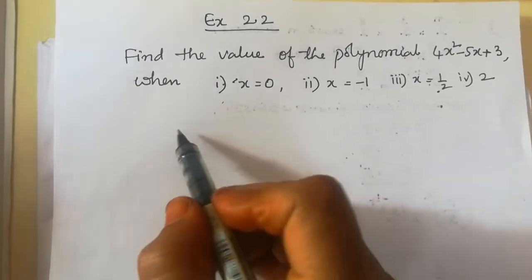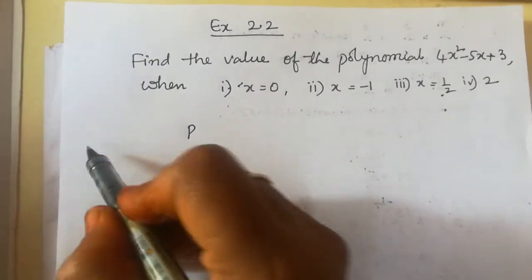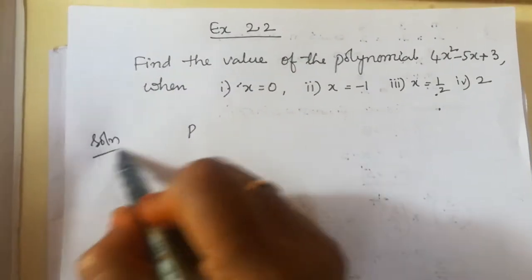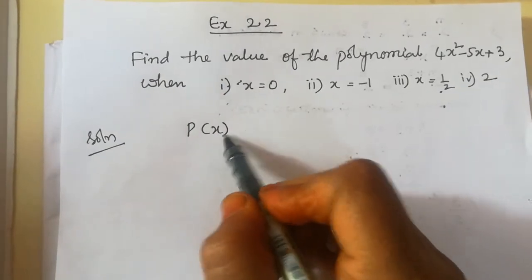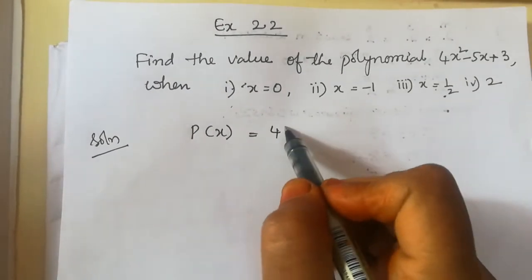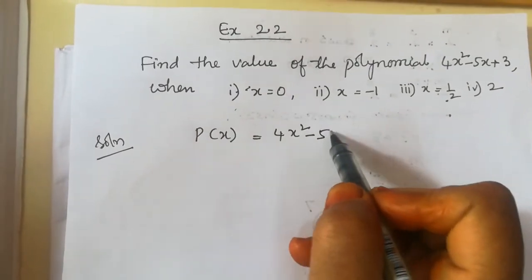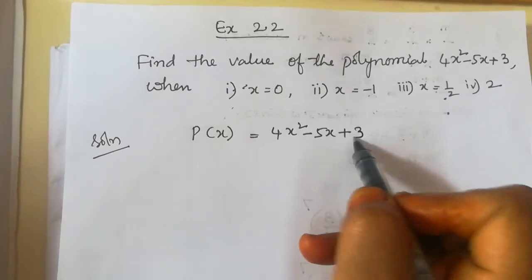Now we have to suppose that P of x is given as 4x squared minus 5x plus 3.